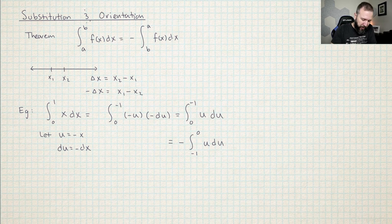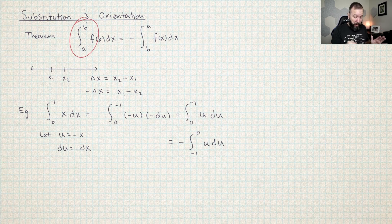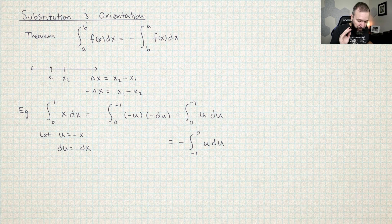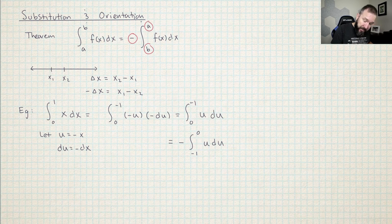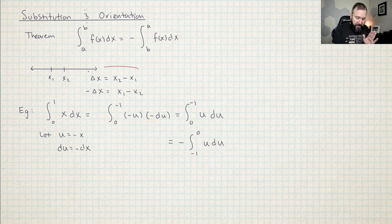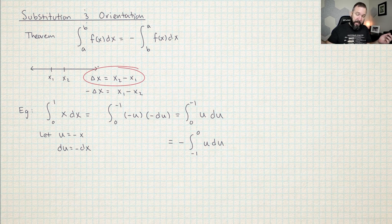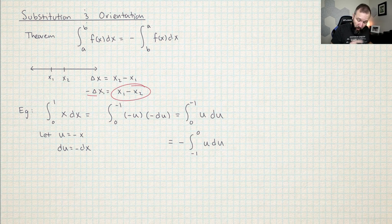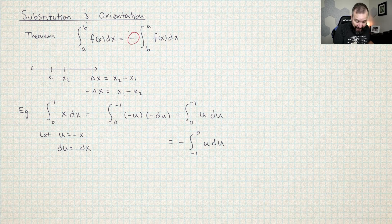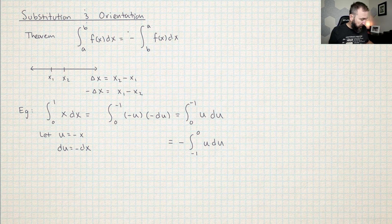This is how reversing the orientation looked in Calc 1. When doing an integral, we put the little number on the bottom and the big number on top — the orientation is integrating from left to right. If somebody gave it to you backwards, you put a negative out front and switch them so they're the right way again. This works because of the definition of Riemann integration: delta X is defined as x_2 minus x_1, so if you're integrating in the wrong way, all your delta X's are negative. So if you're ever integrating in the wrong direction, change the order and put a negative in front.